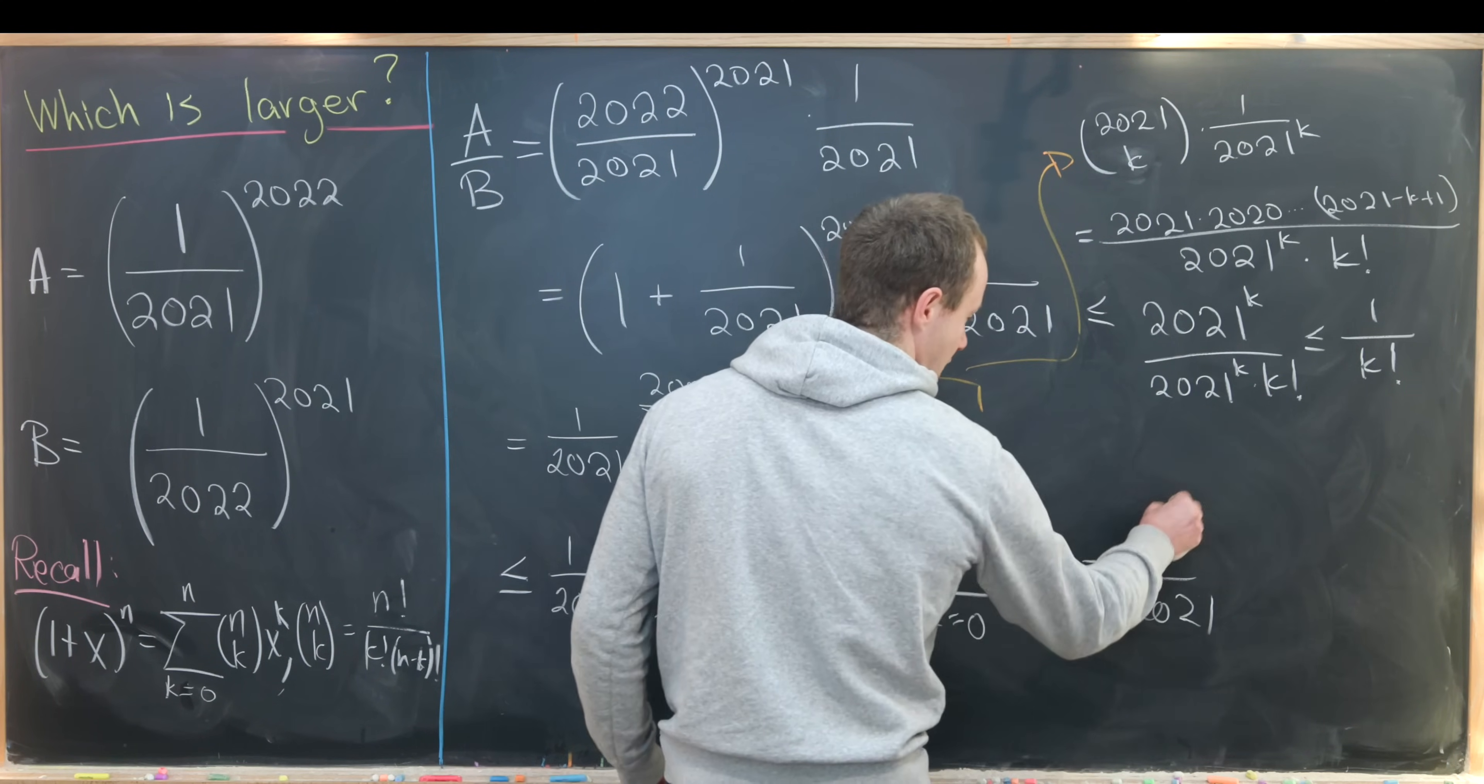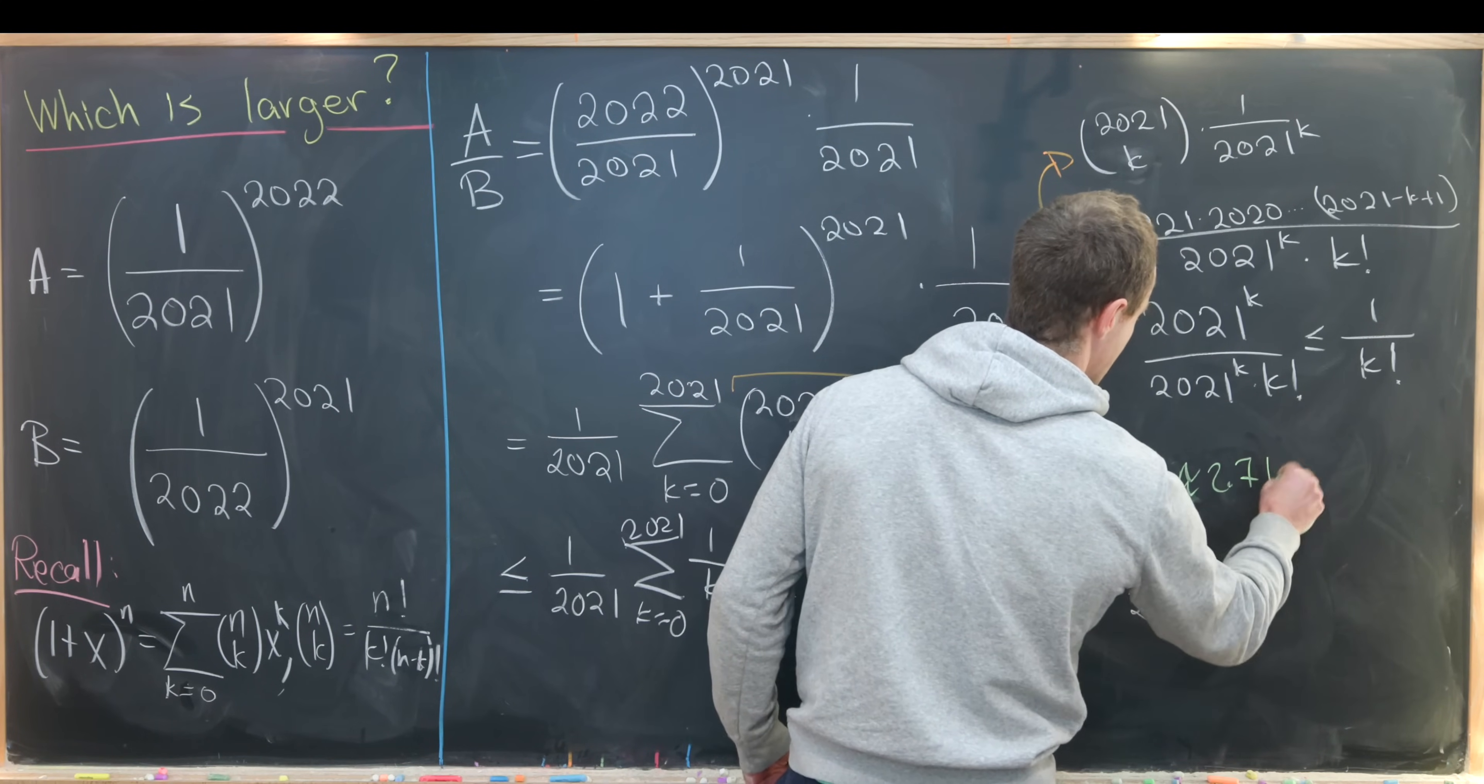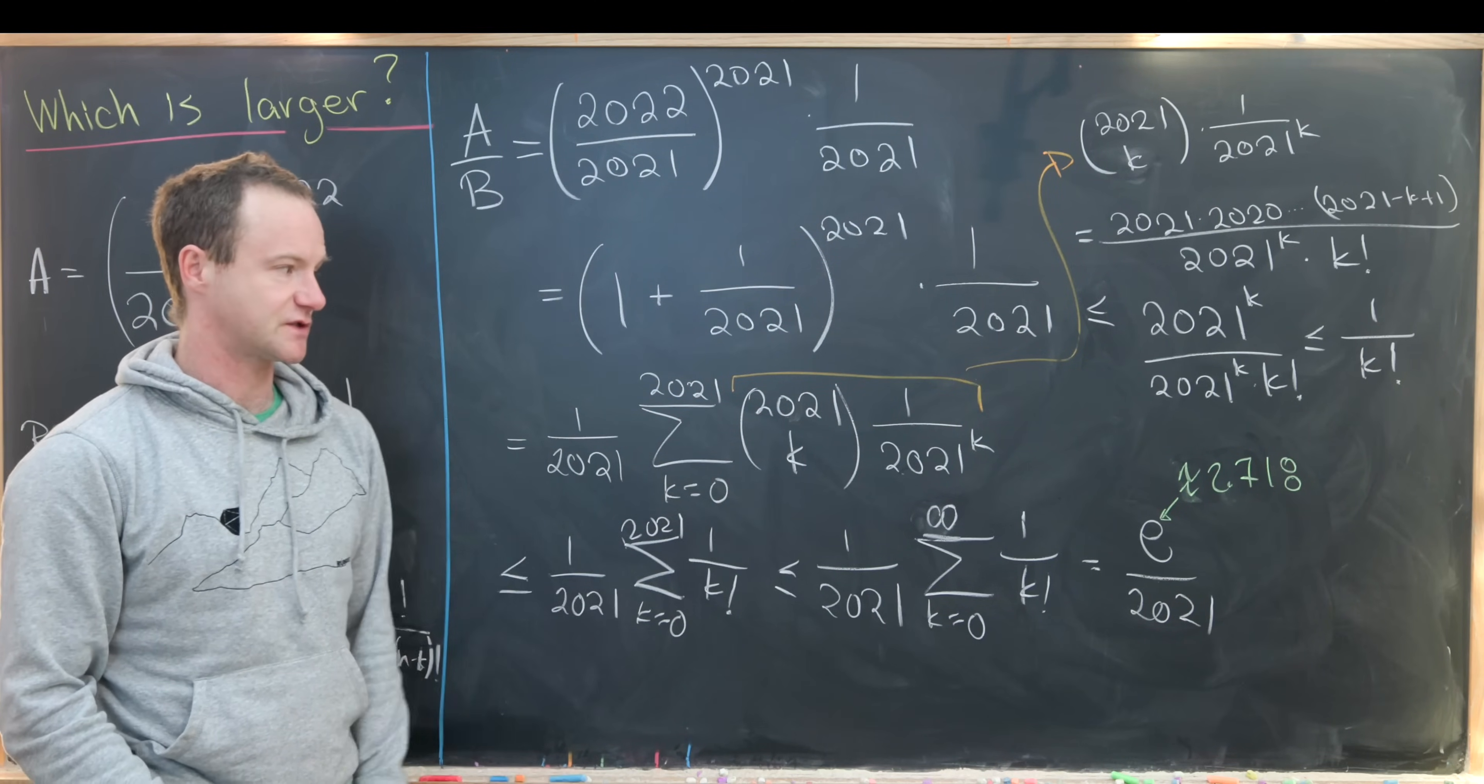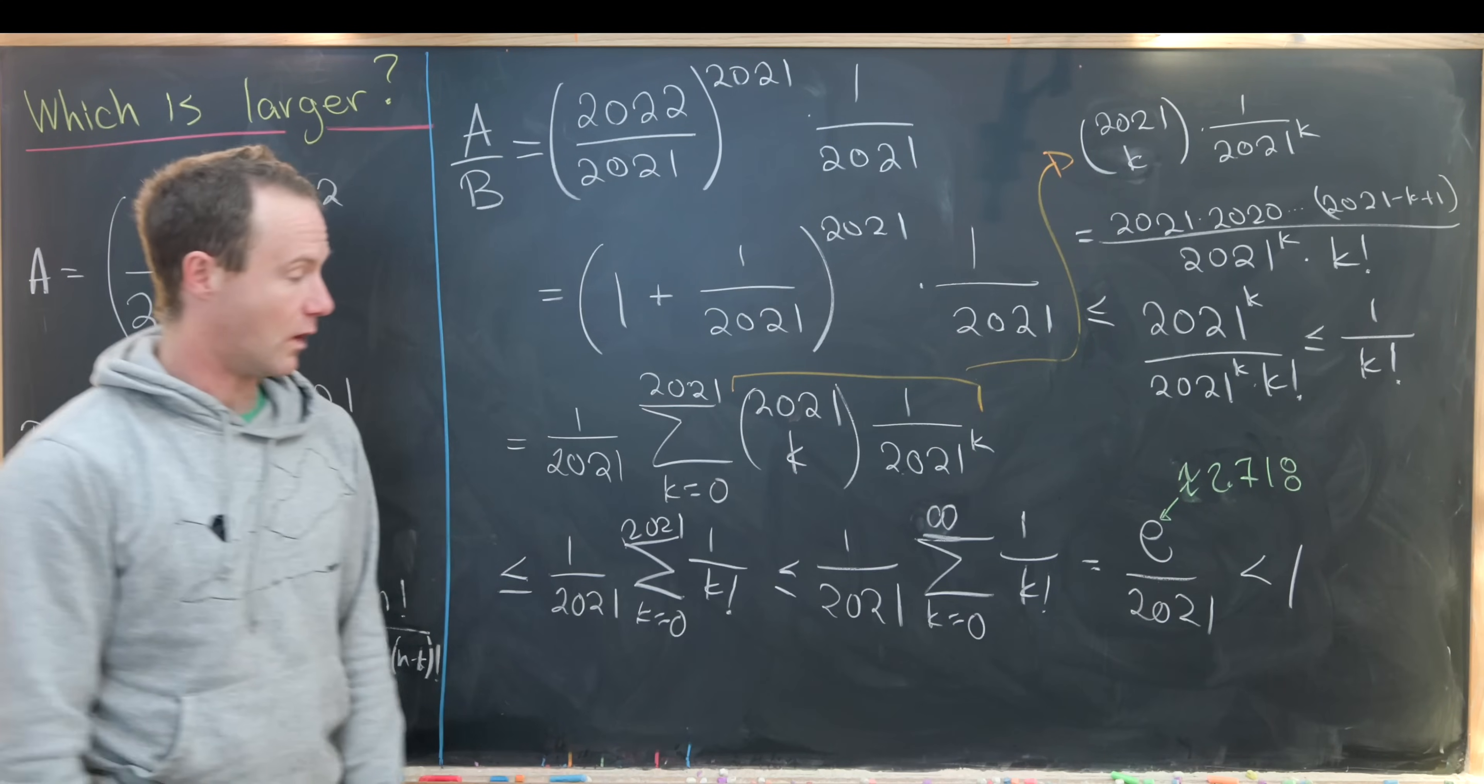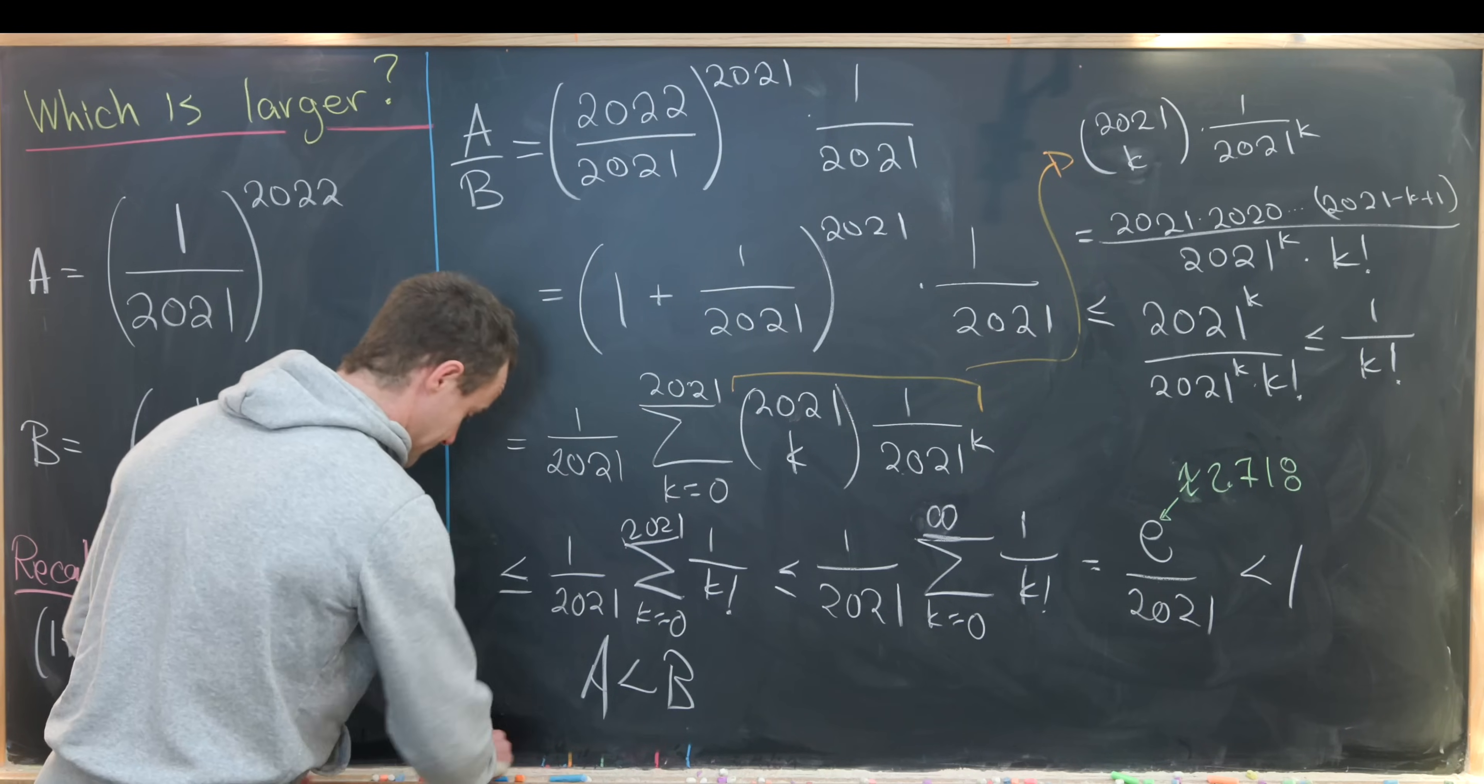Let's recall that e is approximately equal to 2.718. If we have 2.718 in the numerator and 2021 in the denominator, then that is clearly less than 1.